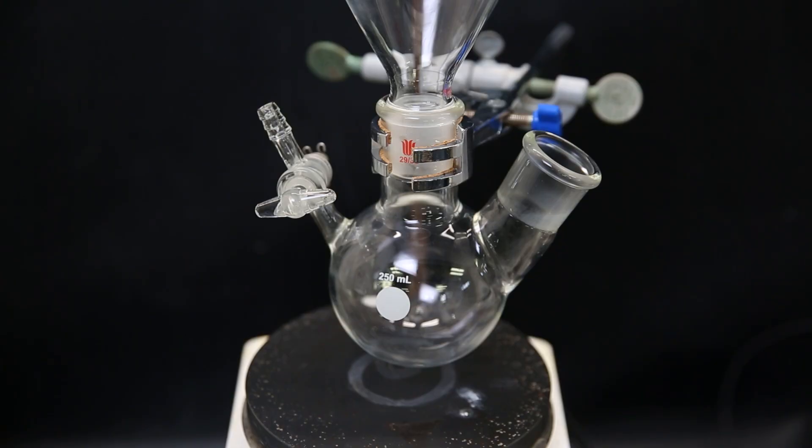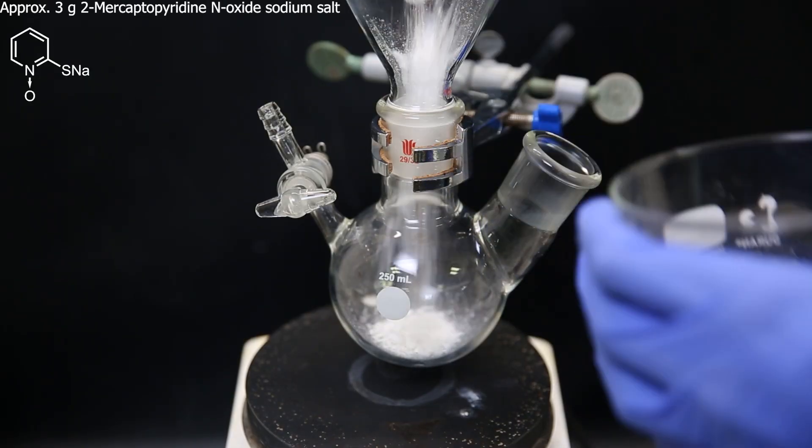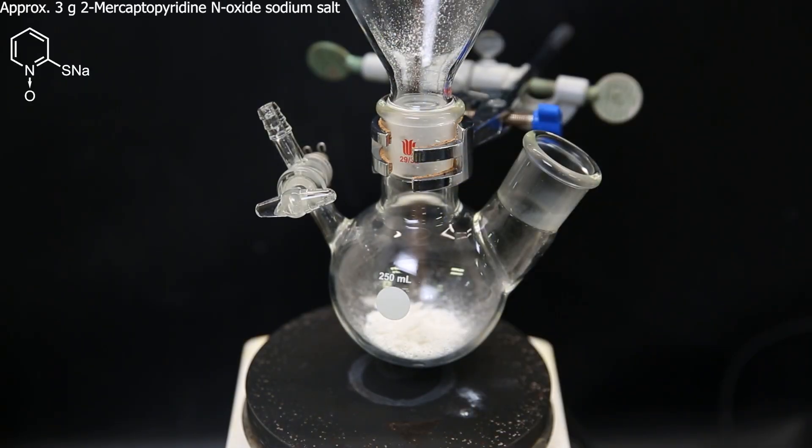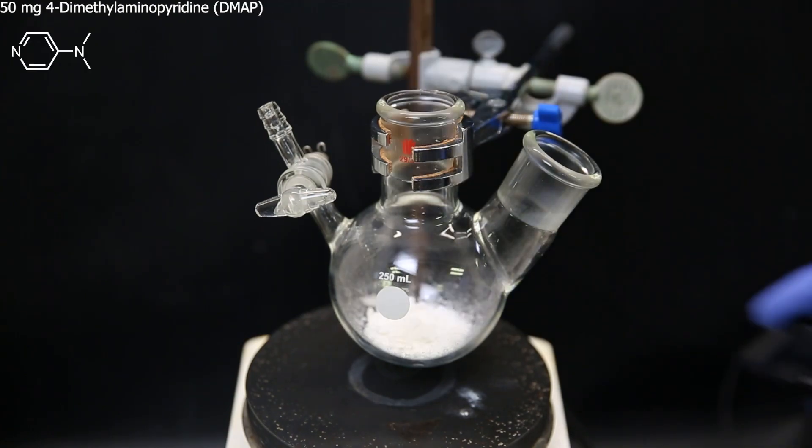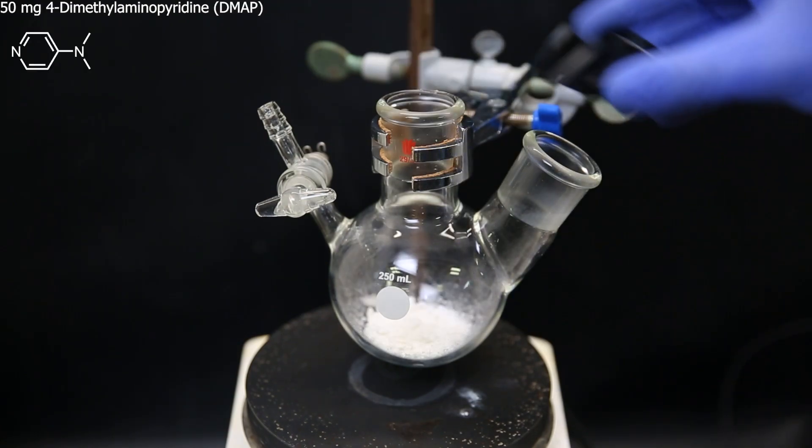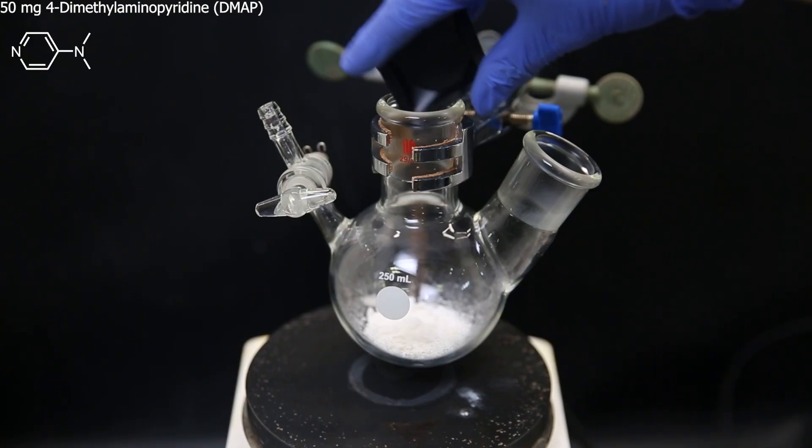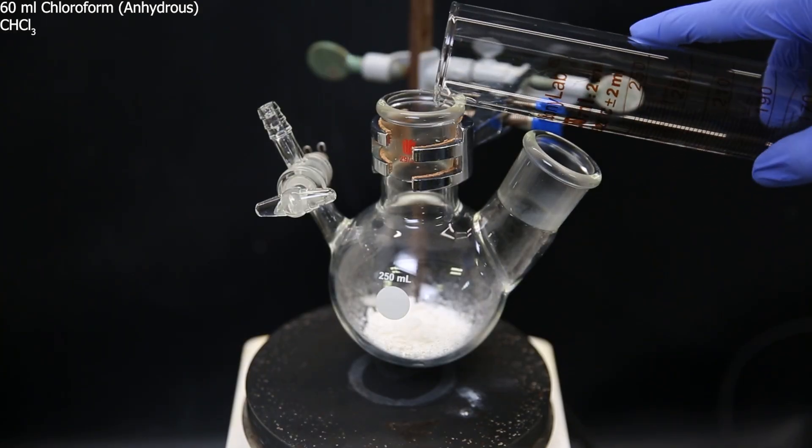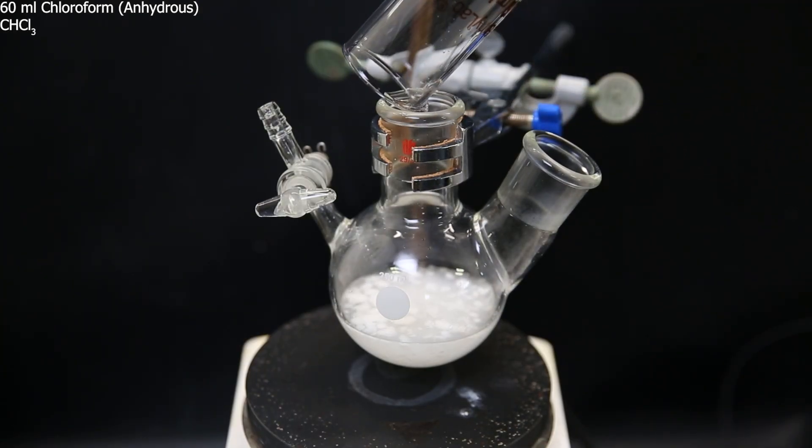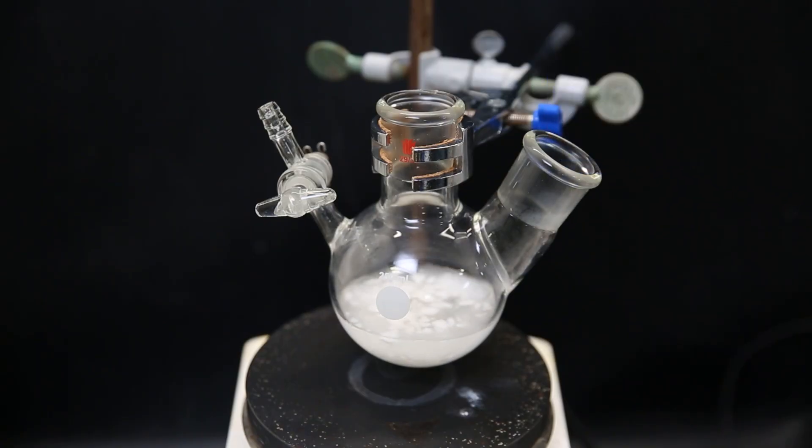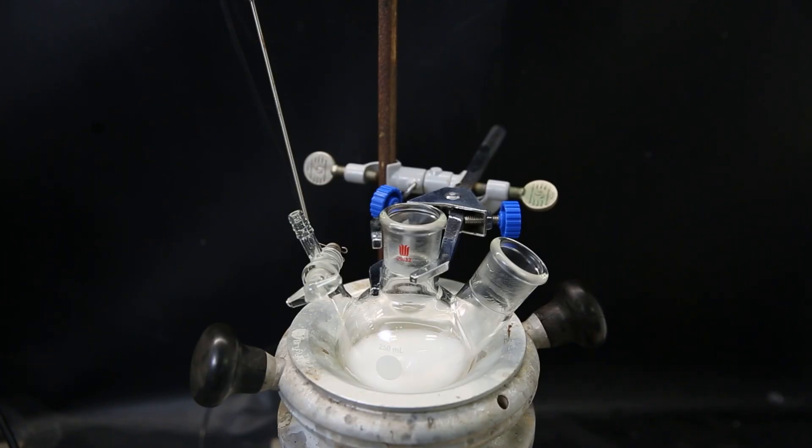I then set up a flask with a funnel and add in about 3 grams of the salt. I didn't measure how much exactly since it is in excess anyway. To that, I add 50 mg of 4-dimethylaminopyridine or DMAP for short. I then add 60 ml of anhydrous chloroform and add a stir bar. I leave it to mix for a while and then set it in a heating mantle.